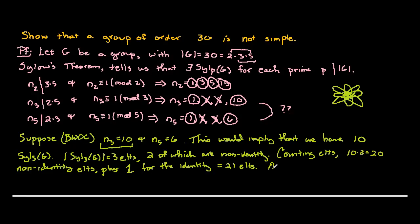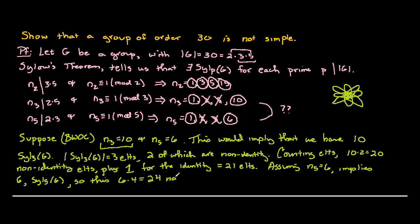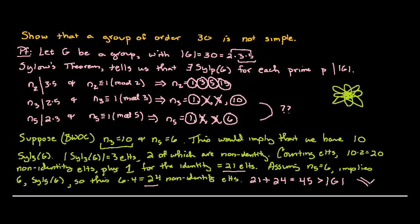If N₅ equals 6, there are 6 Sylow-5 subgroups, each with 5 elements and 4 non-identity elements. That gives 6 times 4 equals 24 non-identity elements. Combined with the 21 elements already accounted for from the Sylow-3 subgroups, these are all distinct elements since the order of any element must divide the group order. We've accounted for 45 elements, which is bigger than the size of our group G. That's a contradiction.